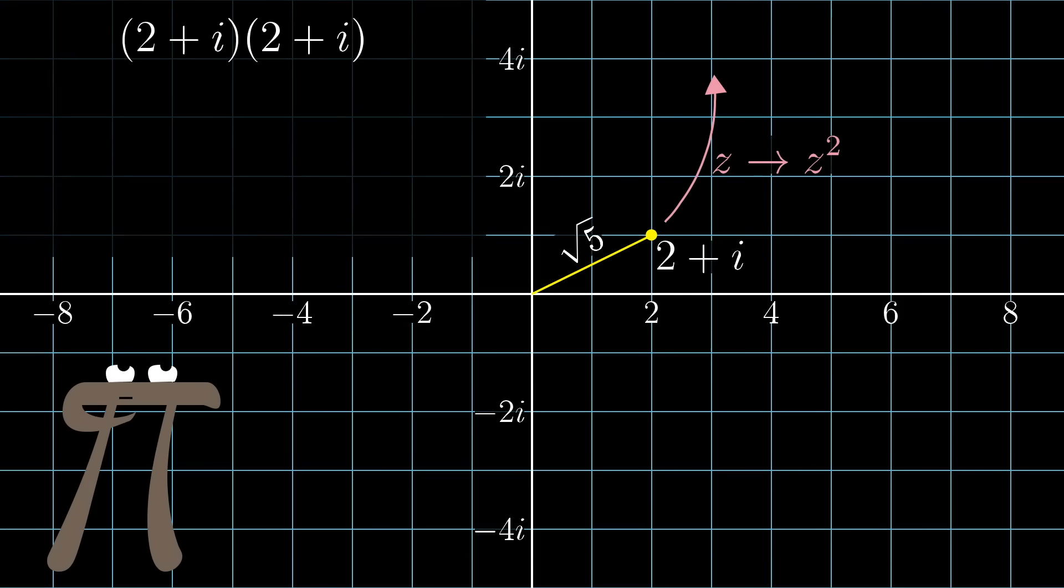Algebraically, when you square a complex number, expanding out this product and matching up all of the like terms, because everything here just involves multiplying and adding integers, each component of the result is guaranteed to be an integer, in this case you get 3 plus 4i.